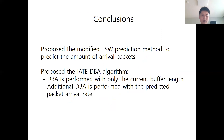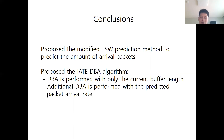In this paper, we propose the IAT method, which is a new method for DBA of XGS-PON using the modified TSW prediction method to predict the amount of arrival packets in the next unit time. First, DBA is performed with only the current buffer length, and then additional DBA is performed with the remaining bandwidth and predicted packet arrival rate. We compared the performance of the proposed method with a method without packet prediction and with a method predicting the packet arrival amount in the next unit time as equal to the current unit time arrival amount. It was verified that the proposed method was superior in mean delay for the higher service classes compared to other methods. Thank you for watching.